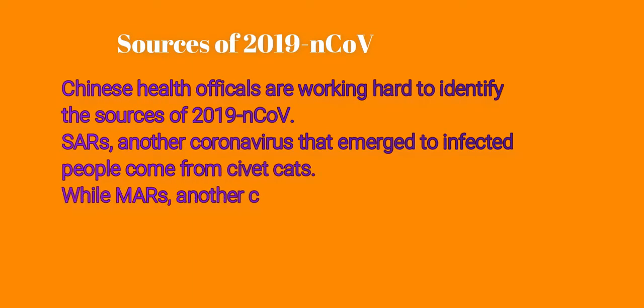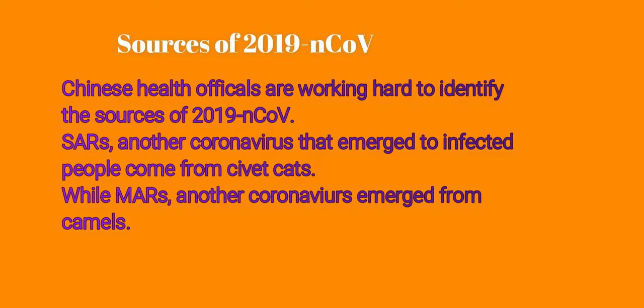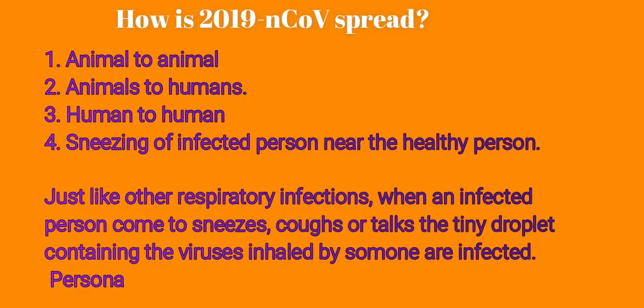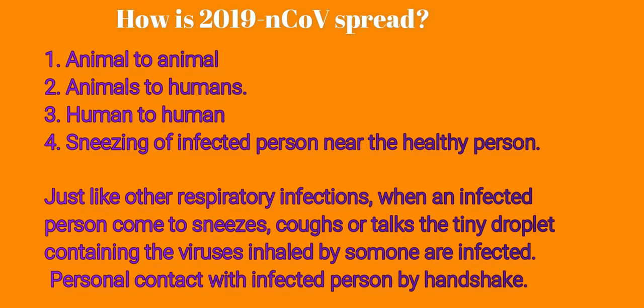Chinese health officials are working hard to identify the sources of 2019-nCoV. Some coronaviruses that emerge to infect people come from civets, while MERS and other coronaviruses emerge from camels. The question is: how is 2019-nCoV spread? First, from animals to animals; second, from animals to humans; third, humans to humans; fourth, sneezing of an infected person onto a healthy person.